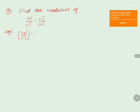We will take the LCM, which is (1-i)(1+i). The numerator becomes (1+i) whole square minus (1-i) whole square. Now we will expand these values.